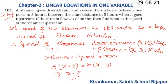Solving the equation gives x = 12 km/h — that is the speed in still water. Therefore, the speed of the steamer upstream is x − 3 = 9 km/h.